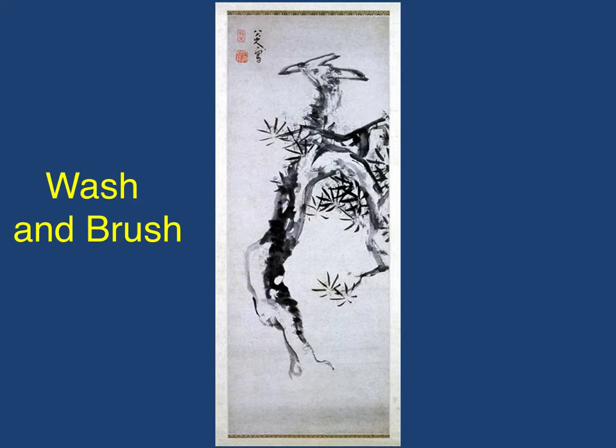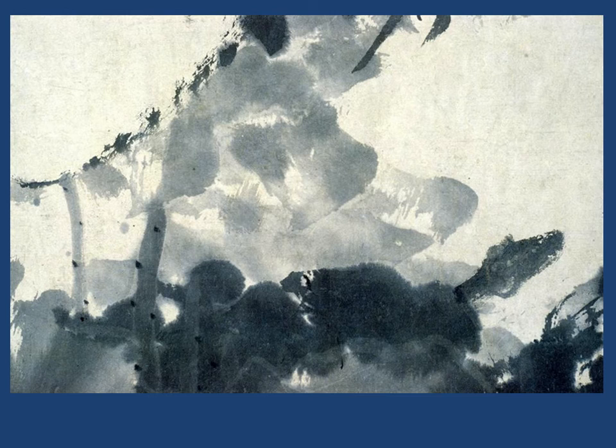The other form of wet media is wash and brush, where we dilute the ink with water and apply it with a brush. It's very similar to watercolor. This type of medium is very difficult to control and dries very quickly. However, it has a level of fluidity that many artists like — a fluidity not available with dry media. As more water is added, the pigment gets lighter, and you can see that sense of fluidity within the work.